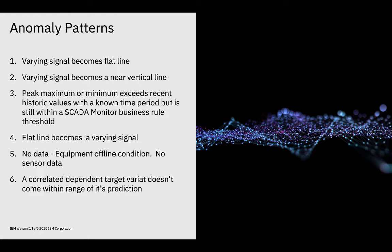The third pattern is where you may have a new historic maximum or minimum that happens. That maximum or minimum may actually occur still within the set points of the SCADA system alarm — it may be less than or greater than an allowed amount — but because it's been done abruptly, it causes an alert. Then the next one is a flat line that becomes a varying signal. In many industrial processes, once they get into their mode, they are very stable, very flat line. When it becomes a varying signal, that's usually an indicator that an anomaly pattern may have occurred.